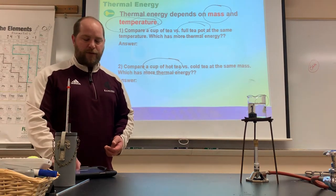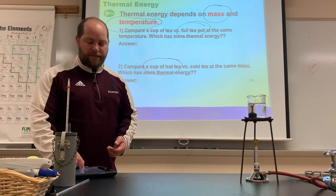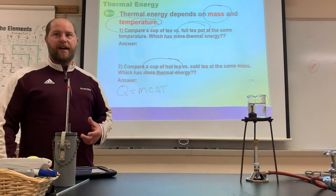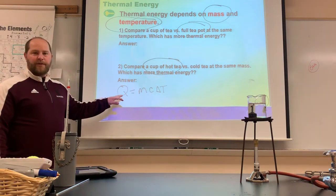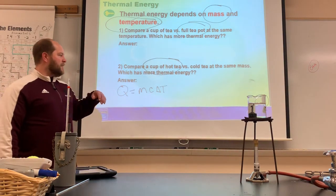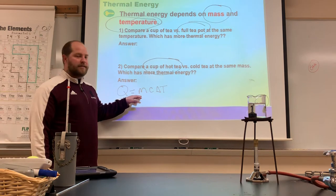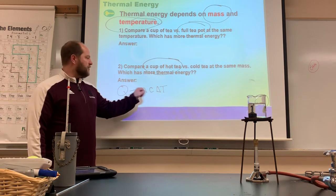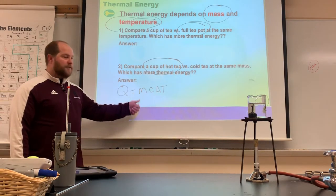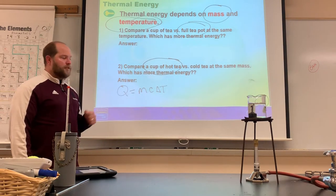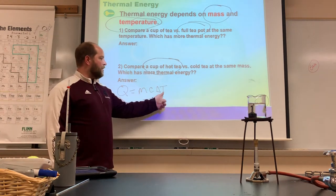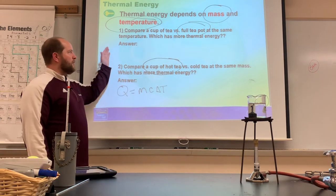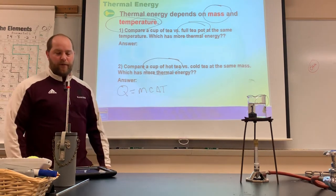Here's a preview of a formula we'll use later: Q equals mcΔT. Q is the heat or thermal energy, m is mass in grams, c is the specific heat of the material, and ΔT is the change in temperature in degrees Celsius. The more mass you have, the more thermal energy; the higher the temperature, the more thermal energy.